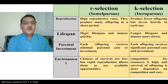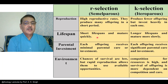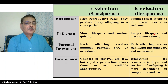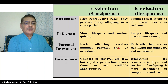Regarding life span, R selection animals — and even other organisms, not only animals but even plants — have a short life duration and mature very quickly. Like certain insects hatch from the puparium and immediately can participate in reproduction. Whereas those showing K selection have a longer life span and mature very slowly. Regarding parental care, each offspring in R selection receives minimum or no parental care at all, whereas in K selection each offspring receives significant parental care and investment.